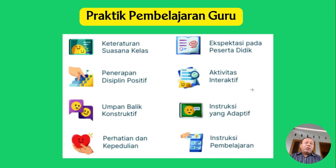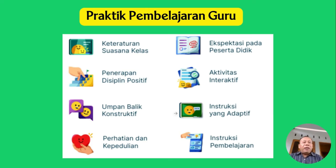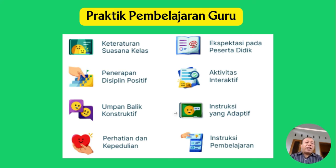Praktik pembelajaran untuk guru memiliki delapan indikator. Dari delapan indikator ini, tidak semuanya dipilih — hanya salah satu saja. Contohnya ada ketertiban kelas, penerapan disiplin positif, umpan balik konstruktif, dan lainnya. Nanti ada rekomendasi dari rapor pendidikan. Dari delapan indikator, nanti ada yang warna merah, kuning, atau hijau tergantung rapor pendidikan. Rekomendasi menyarankan memilih warna merah dahulu; kalau tidak ada merah, pilih kuning; kalau tidak ada kuning, pilih hijau.